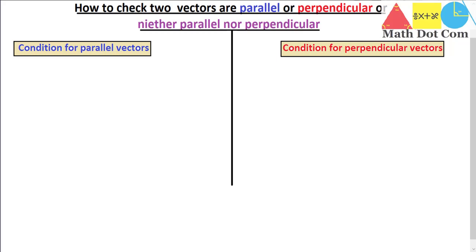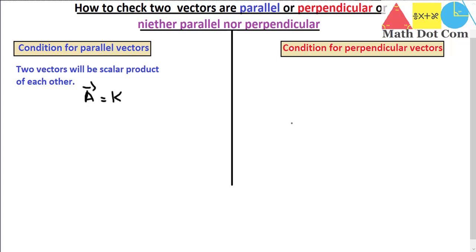The condition for parallel vectors is that two vectors will be scalar multiples of each other. If one vector is a scalar product of another vector, then you can say that the given two vectors are parallel to each other. We can prove this with an example or write it in mathematical form: vector a equals k times vector b.